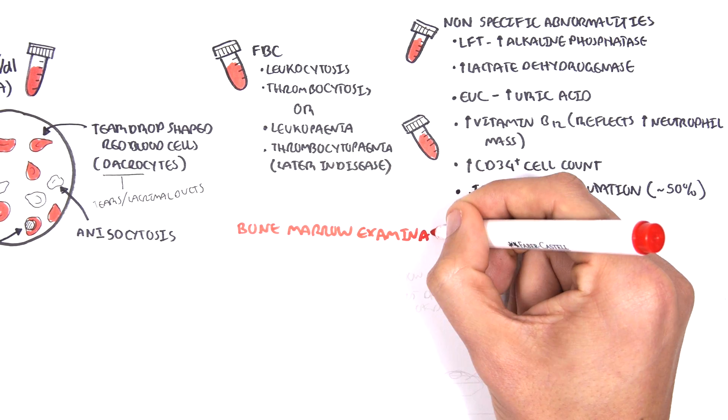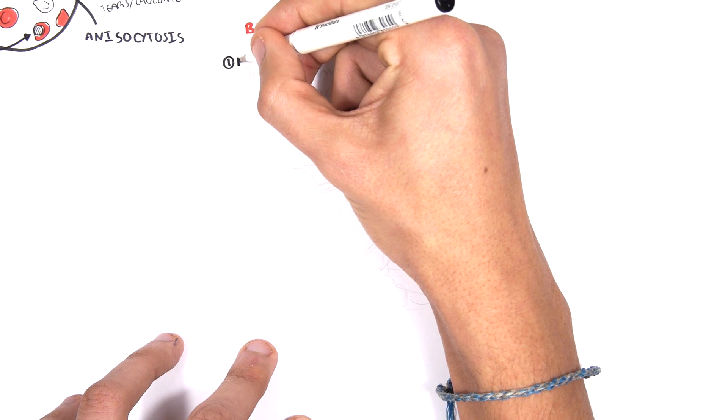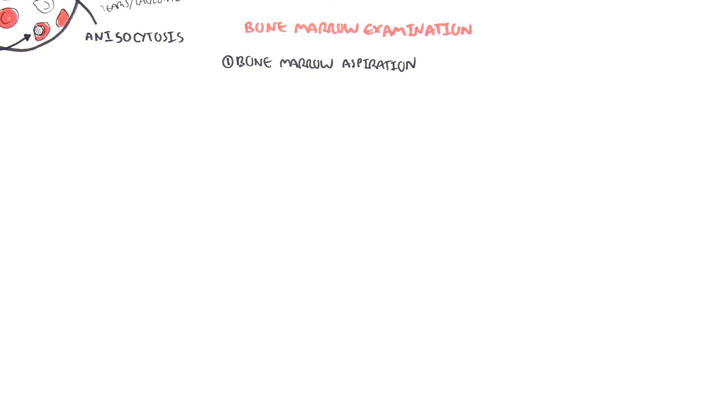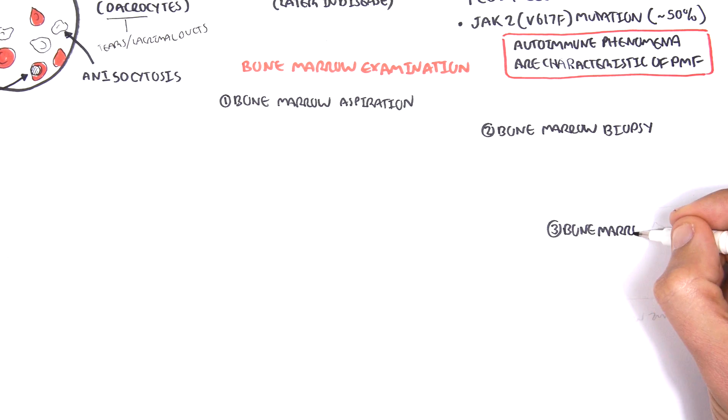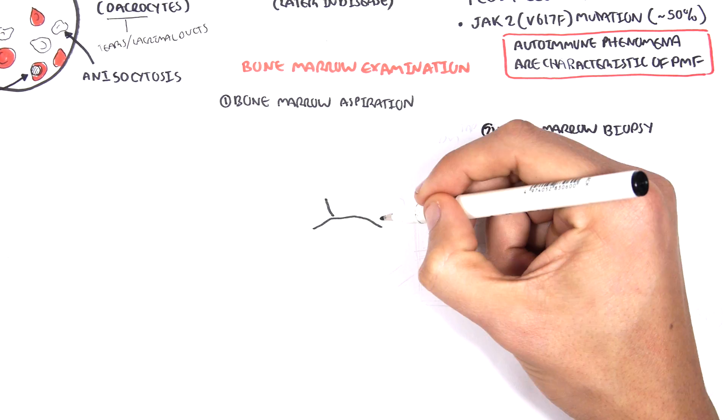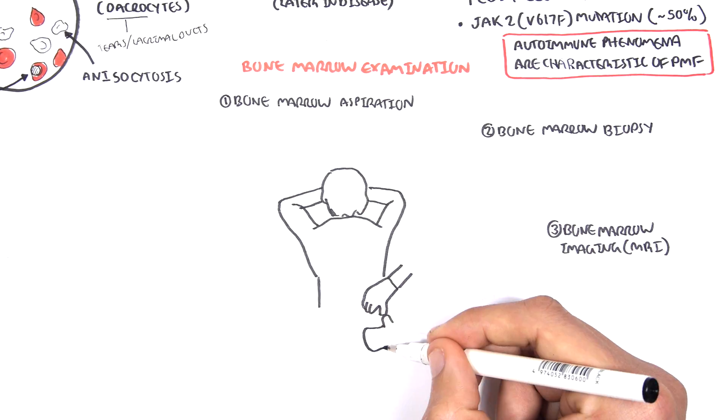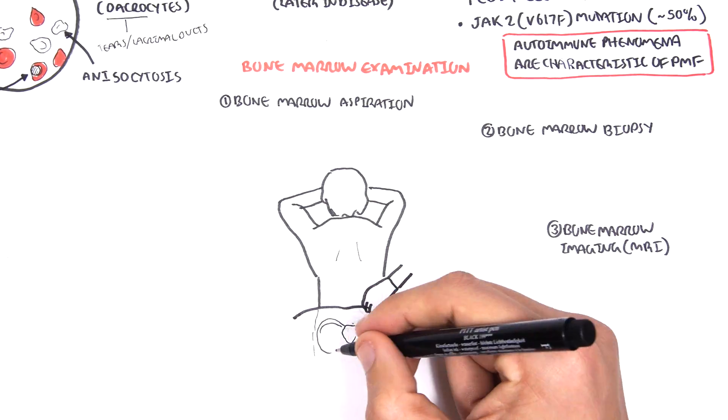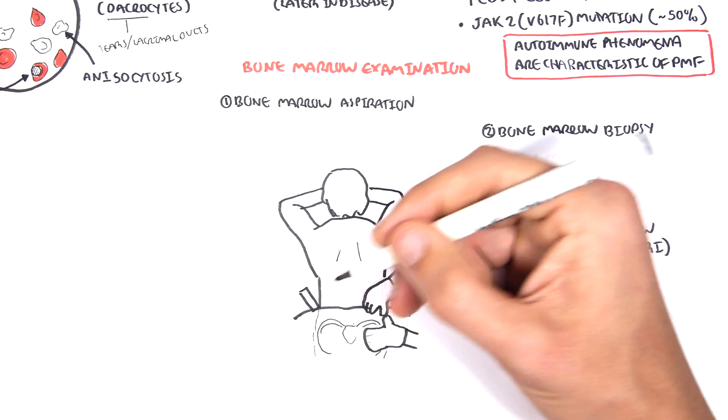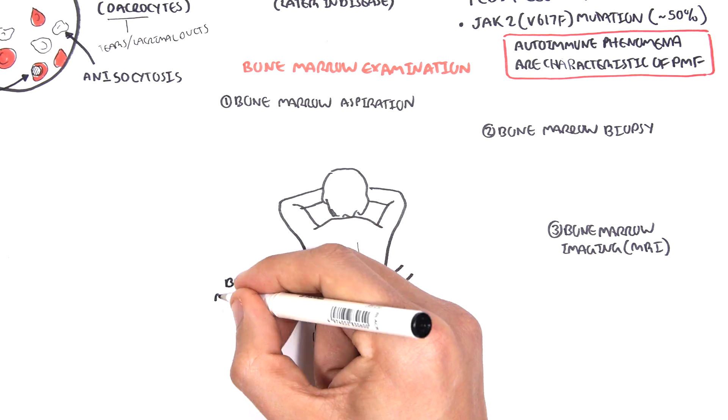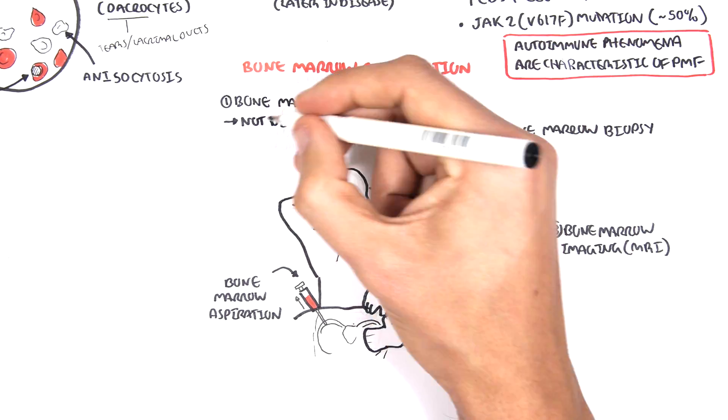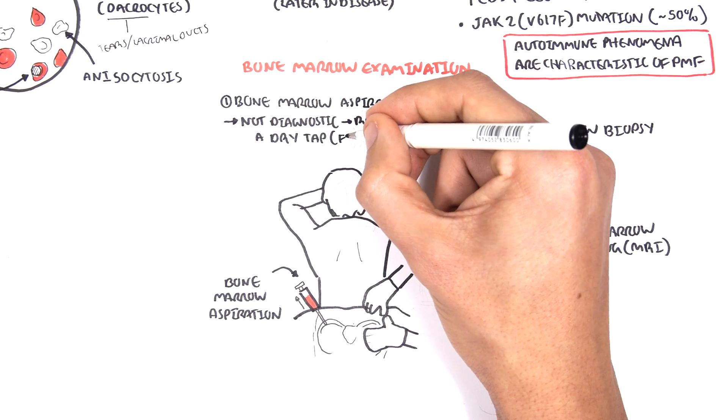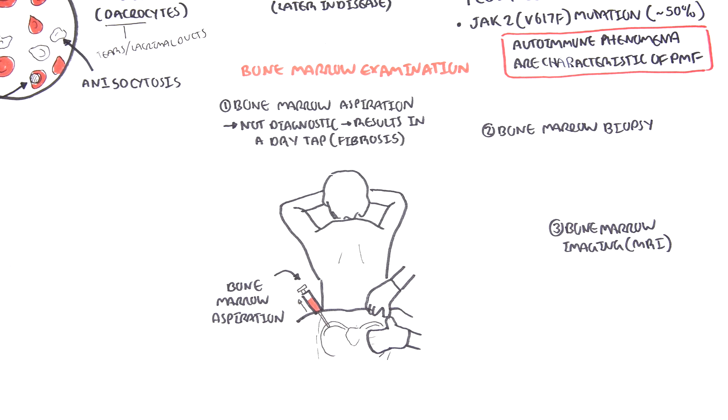Bone marrow examination is a very important part of investigating and helps in diagnosing myelofibrosis. There are three bone marrow investigations: bone marrow aspiration, bone marrow biopsy, and bone marrow imaging using MRI. Bone marrow aspiration can be initially performed. Bone marrow aspiration essentially is aspirating things from the bone marrow typically done on the pelvic bone. However, bone marrow aspiration is not diagnostic and performing the bone marrow aspiration results in a dry tap. It's a dry tap because of the fibrotic tissue in the bone marrow, which leads to nothing coming out.